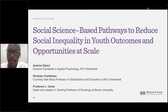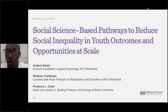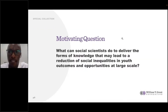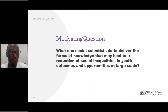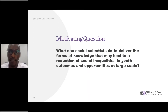In collaboration with Dr. Hirokazu Yoshikawa and Prudence Carter, our task was to identify examples where researchers have generated knowledge that has contributed to inequality reduction at scale. Our motivating question was: what can social scientists do in their role as researchers to generate the kinds of knowledge that may lead to a reduction of social inequalities in youth outcomes and opportunities at scale? There were multiple perspectives that we drew on — examples came from fields of economics, political science, psychology, human development, and education.